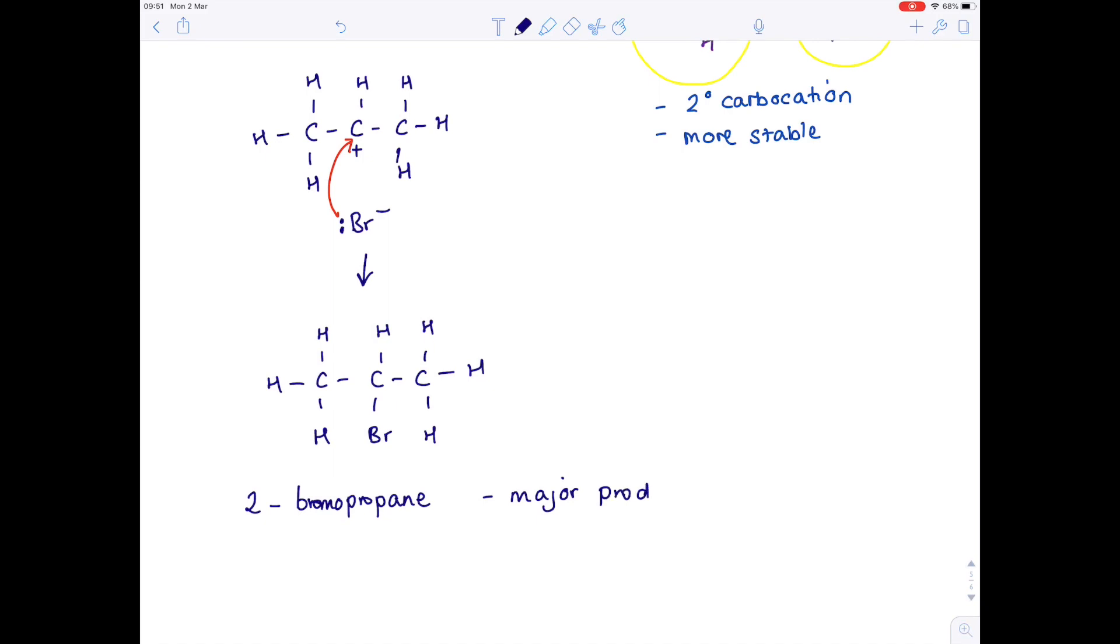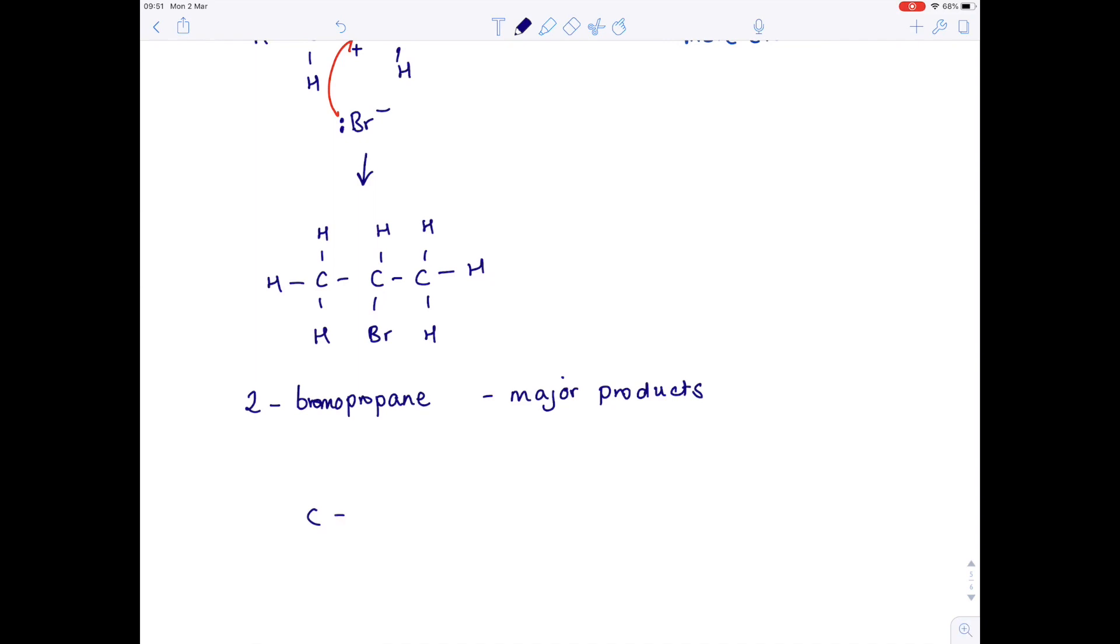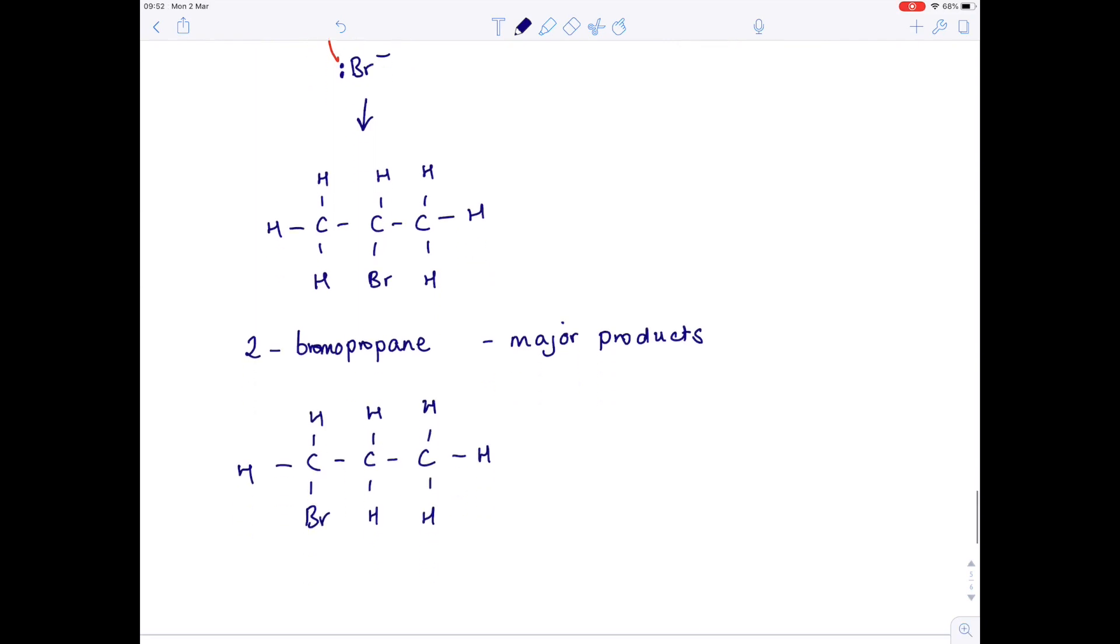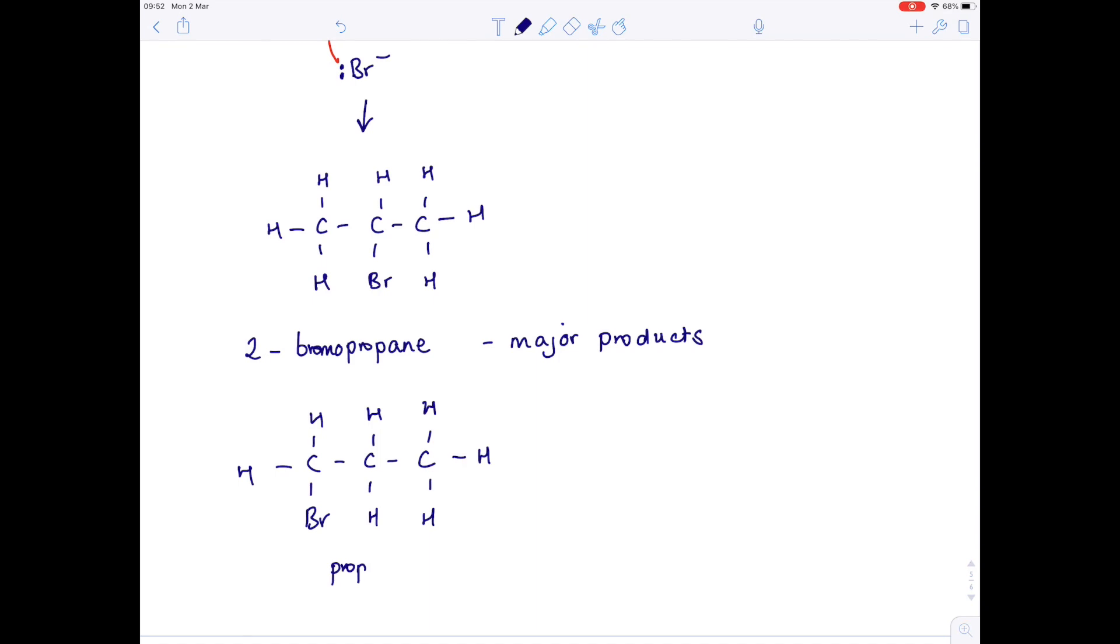Notice that some reactions will occur, which produce the second molecule I was talking about. So I'll draw that out here. So naming that again, we have propane. But this time, the bromine atom is on the first carbon atom. So it's one bromopropane, which is the minor product.